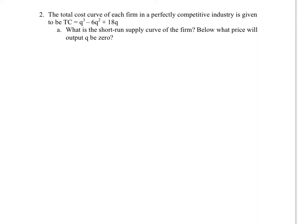Question number 2 — we also went over in class, so we'll go a little faster here. The problem gives you the total cost equation and asks: what is the short-run supply curve for the firm, and below what price will output be zero? In the short run, what matters is average variable cost, since fixed costs are fixed. If price falls below AVC, you shut down; if price equals AVC or more, you continue to produce.